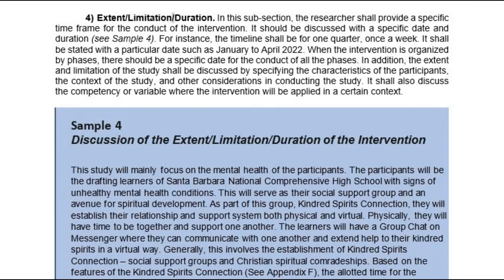Extent/Limitation/Duration: The researcher shall provide a specific time frame for the conduct of the intervention, discussed with a specific date and duration. See sample four. For instance, the timeline shall be for one quarter, once a week, stated with a particular date such as January to April 2022. When organized by phases, each phase should have a specific date. The extent and limitation shall specify the characteristics of the participants, the context of the study, and the competency or variable where the intervention will be applied.